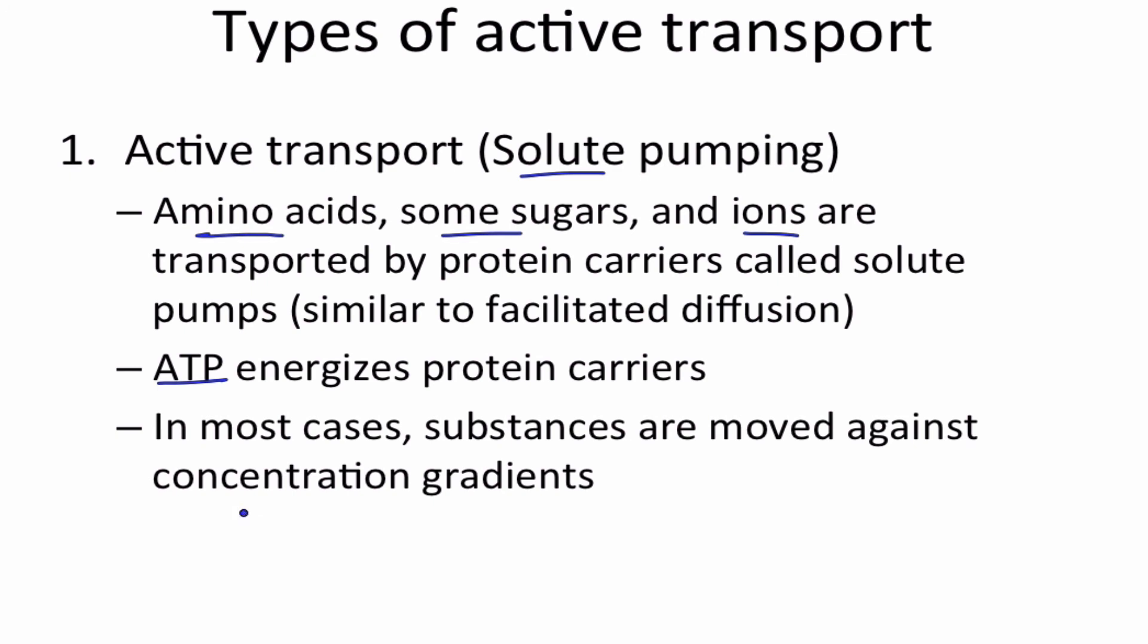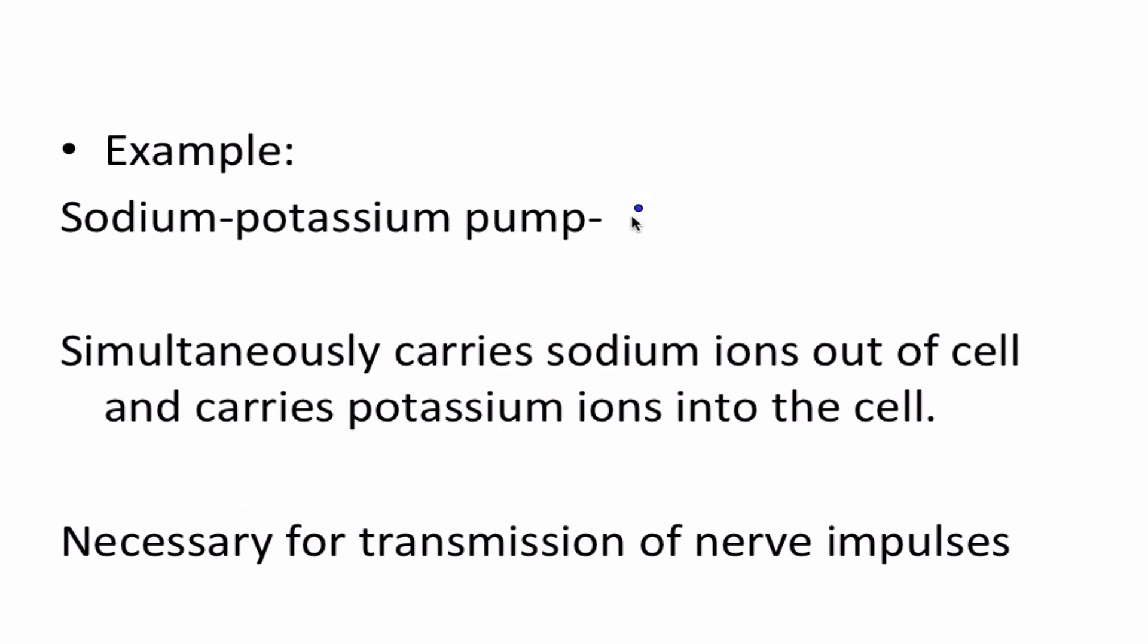In most cases substances are moved against concentration gradient. So again, this is going from low concentration to high concentration. A sodium potassium pump can simultaneously carry sodium ions out of the cell while carrying potassium ions into the cell. This is necessary for the transmission of nerve impulses and ATP is required.